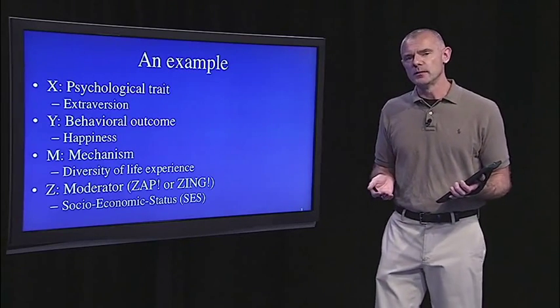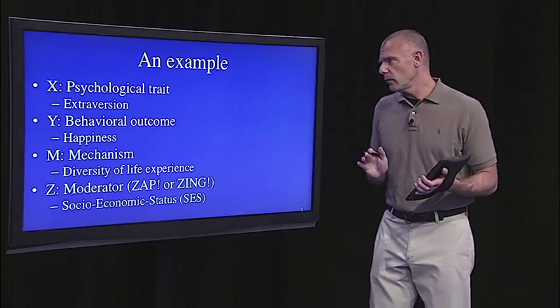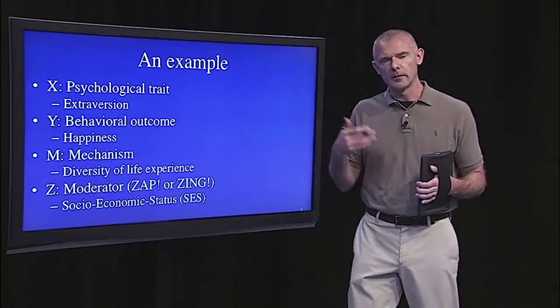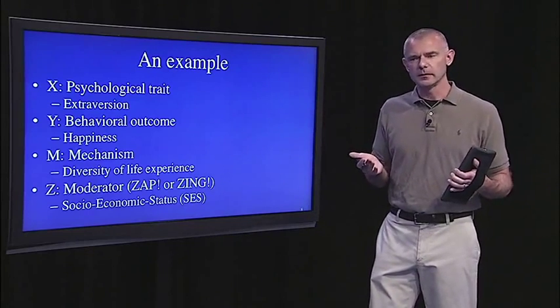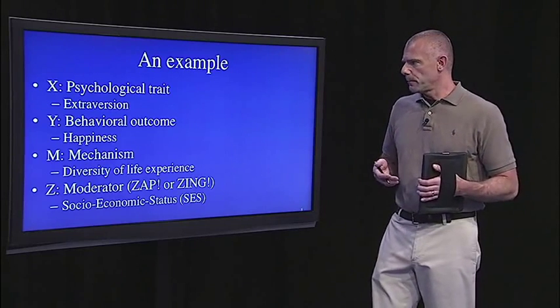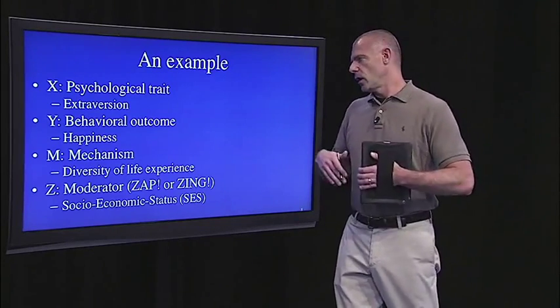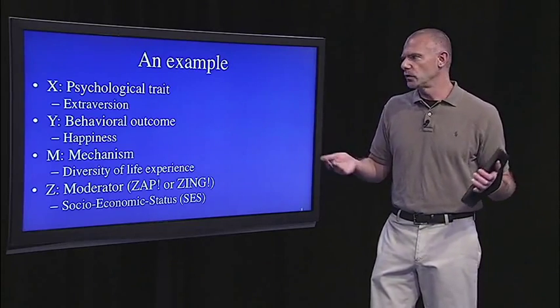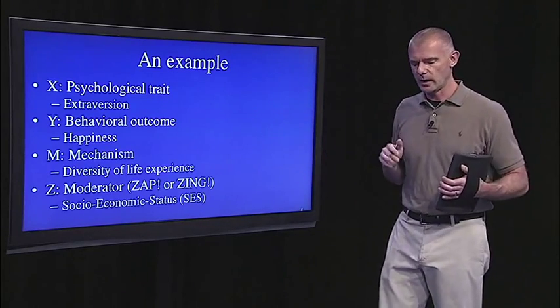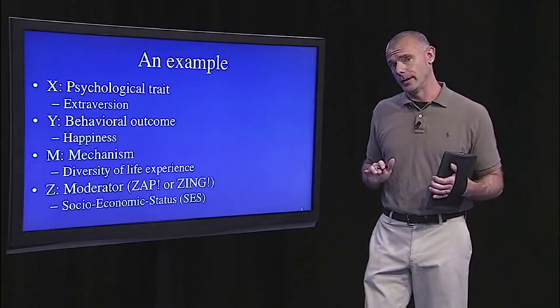I'm gonna go back to this example we used in mediation. So in this example, our main predictor variable X was just some psychological trait, let's say extraversion. And we're looking at some outcome, let's say happiness. And remember when we did the mediation analysis, what we saw was maybe the reason that people who are extraverted are happier is because they have more diversity in their life experiences. So extraversion leads you to be more outgoing, experience more things, and that makes you happier. And that's what we saw in the mediation analysis.